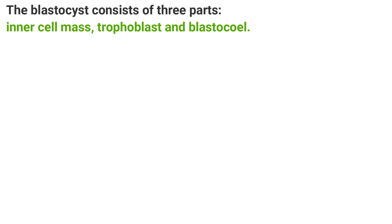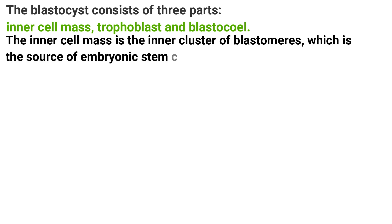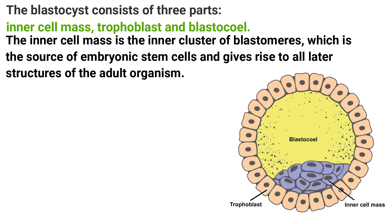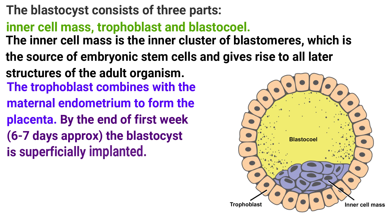The inner cell mass is the inner cluster of blastomeres, which is the source of embryonic stem cells and gives rise to all later structures of the adult organism. This is very important — these cells shown in blue in the diagram are embryonic stem cells and will form the entire organism. The trophoblast combines with the maternal endometrium to form the placenta.